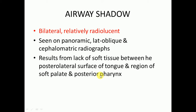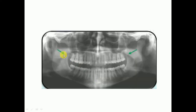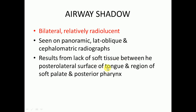First we have the airway shadow, which is present bilaterally and is a relatively radiolucent structure. It is seen on panoramic, lateral oblique, and cephalometric radiographs, and results from lack of soft tissue between the posterior lateral surface of the tongue and the region of the soft palate and posterior pharynx. You can also find shadows of the tongue here.